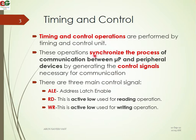The Timing and Control Unit handles synchronization between the microprocessor, peripheral memory, and all communications. There are three main control signals. The first is ALE — Address Latch Enable. The next are Read and Write. Read is active low and is used for reading operations; Write is active low and is used for writing operations. If you need to read a value from memory or input devices, you need to give the value zero on the Read pin.